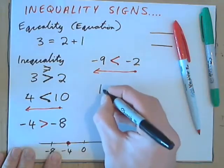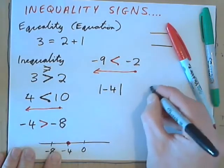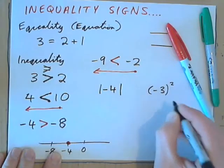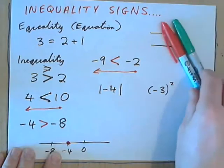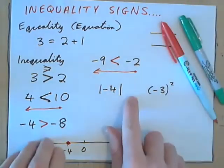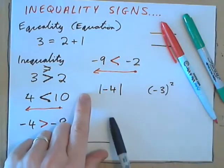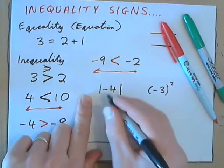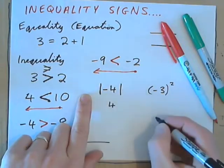You might also see something like this. Absolute value of negative 4. And then, over here, we might have negative 3 all squared. And you might have to put an inequality sign in between them. So first of all, we calculate each value. Absolute value of negative 4 gives us positive 4. And we've studied that.